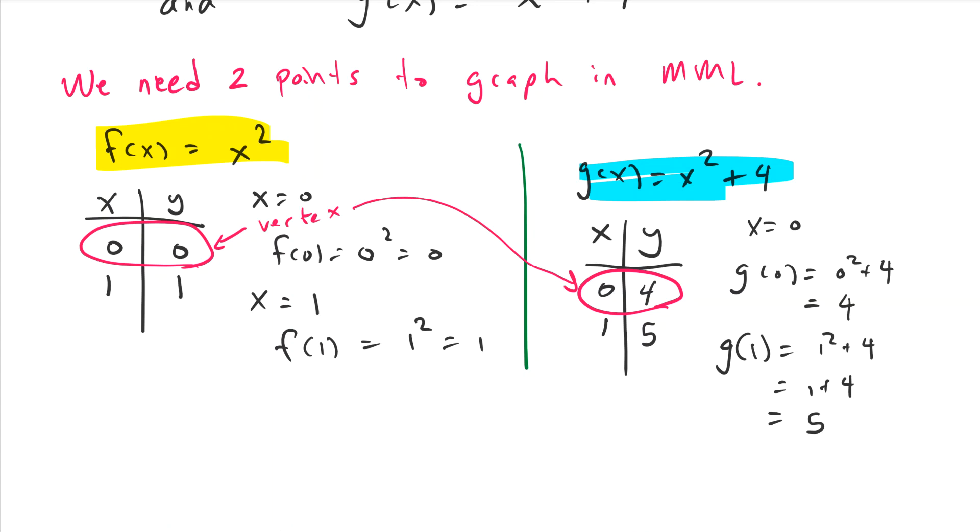The other point can be anything. I chose x = 1. When you plug 1 into x squared, you get 1, so the point (1, 1). When you plug 1 into g, you get 1 squared plus 4, which is 1 plus 4, which is 5. So we have our two points for each function.